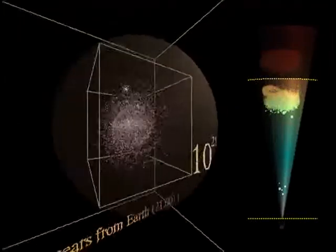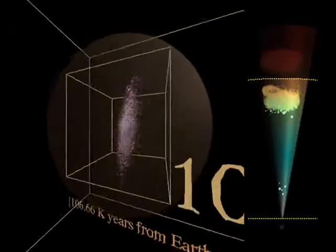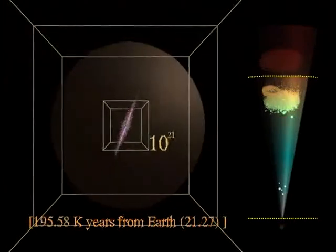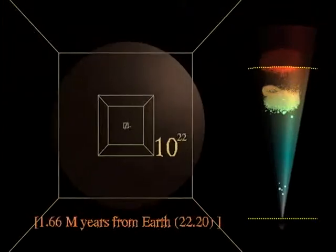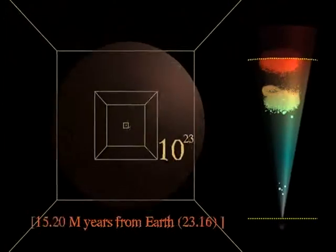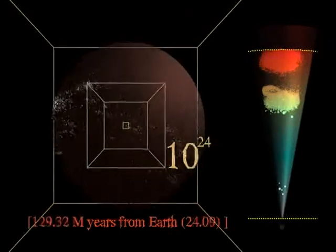When we reach the Milky Way, we turn it on its edge and retreat back through the mass of observable galaxies, revealing the disk-shaped gap where the Milky Way itself shadows our view of the distant universe.